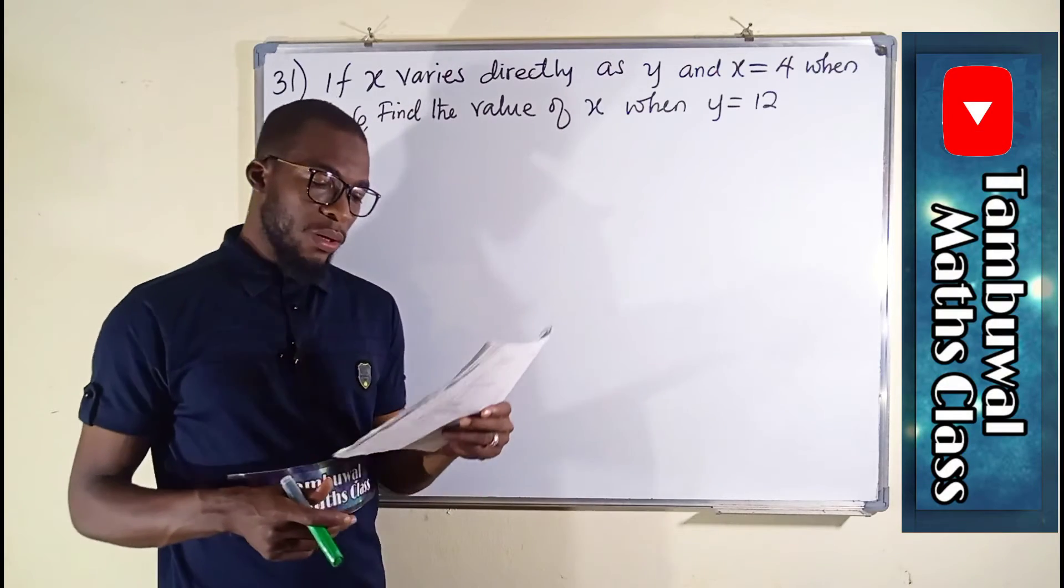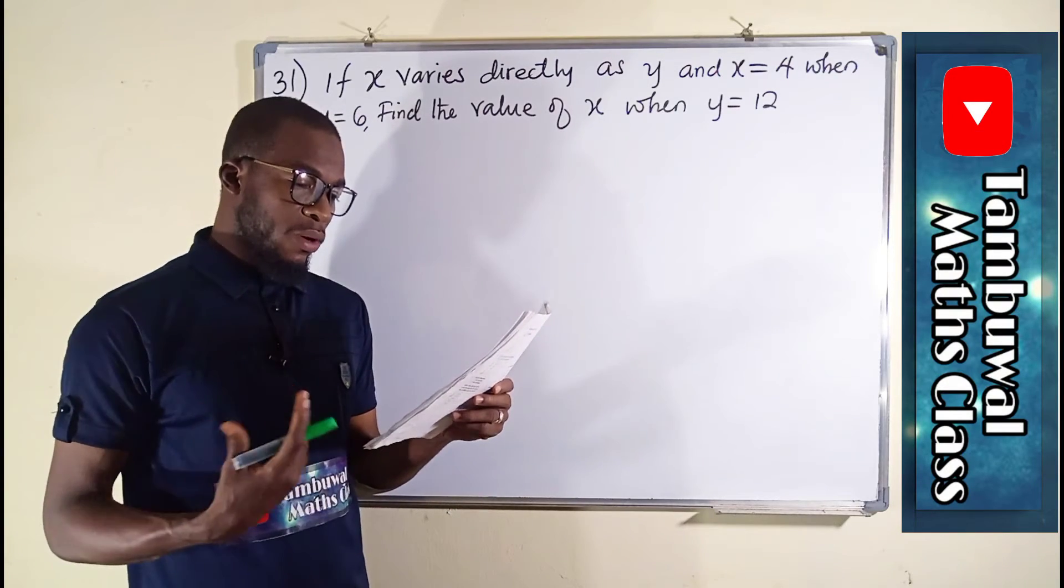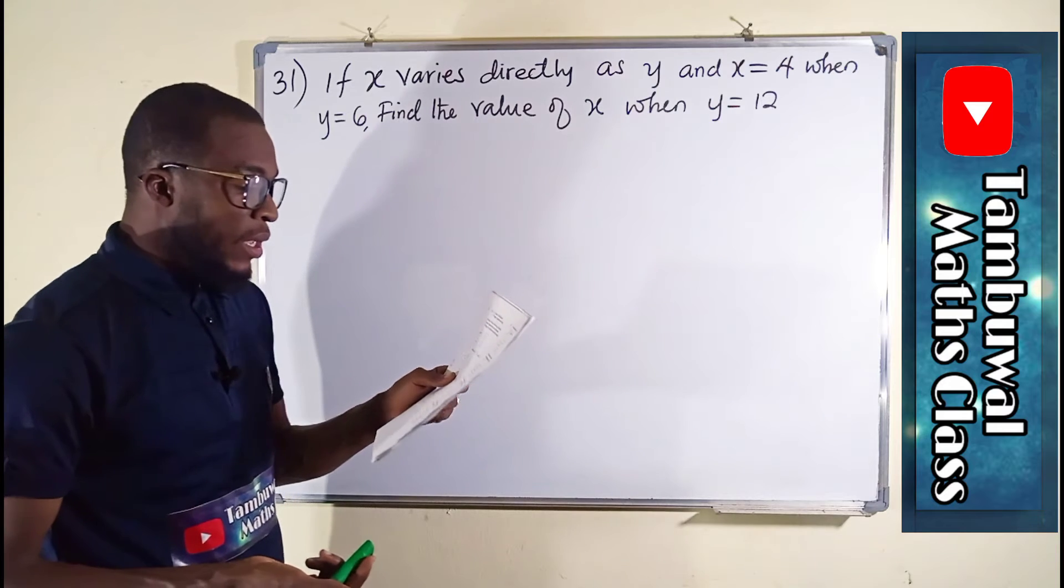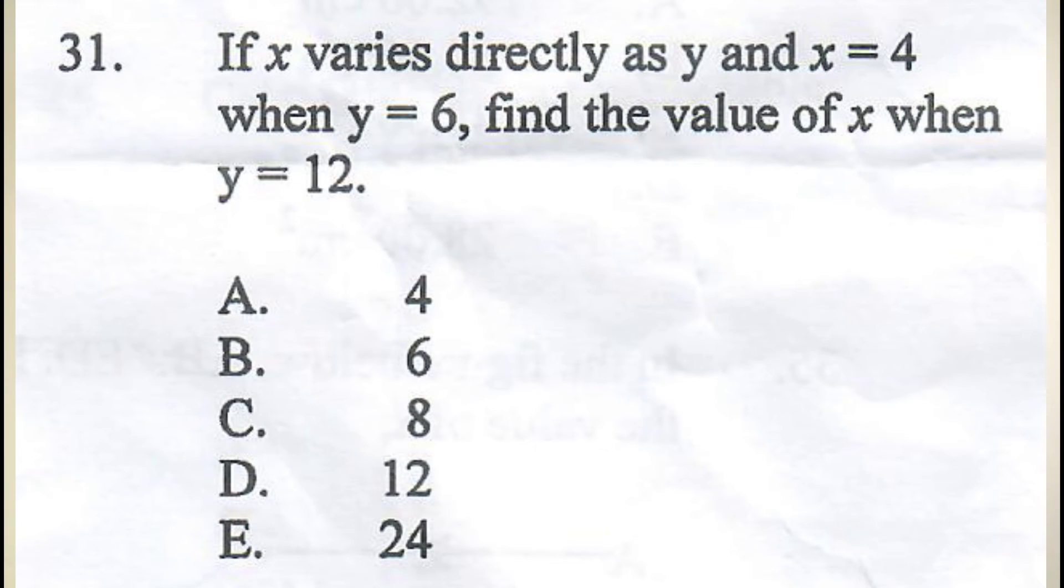Question number 31 is a question under variation. It says if x varies directly as y, and x equals 4 when y equals 6, find the value of x when y equals 12.